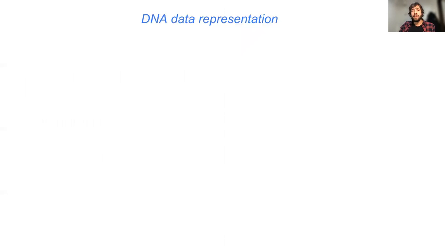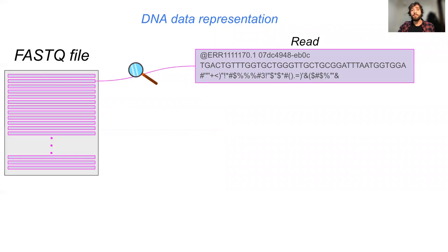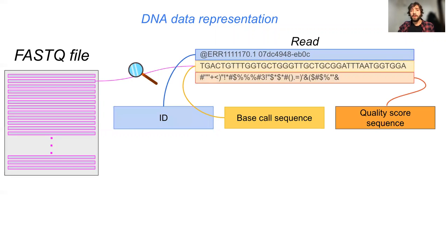To understand how we can attack this problem, I would like to begin by explaining how DNA sequencing information is represented and what makes Nanopore data special. DNA sequencing information is typically stored in the FASTQ format, which consists of a set of many thousands of reads, each one composed of an identifier string, a base call sequence, which is a string of base pairs, and a quality score sequence.